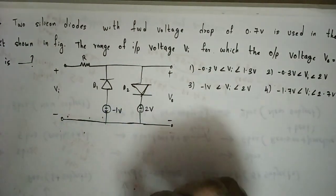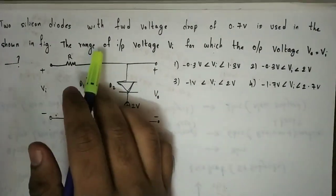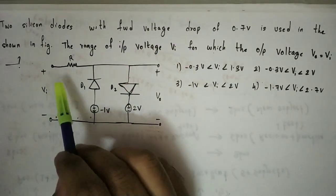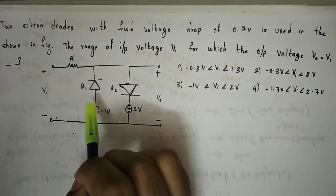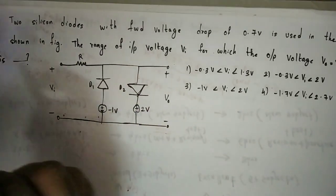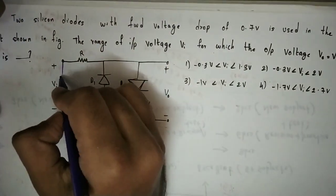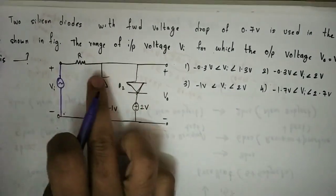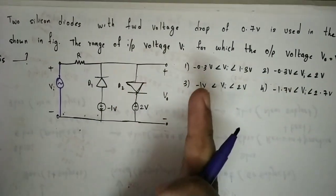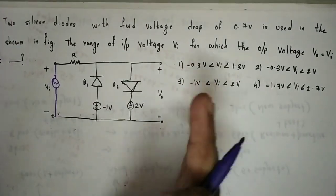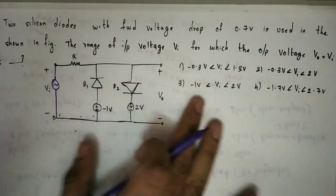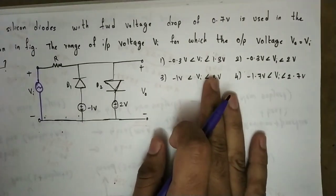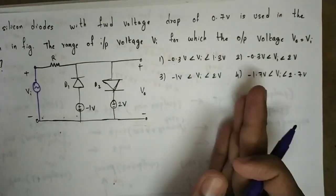In this circuit we are using two diodes. We need to find the range of input voltage VI for which the output voltage V0 is equal to VI. There are three answer options. This is also an IIT Bombay question.